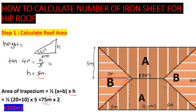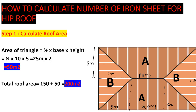Now for the triangles: area of a triangle = half × base × height. Our base is 10 meters and height is 5 meters, giving 25 square meters per triangle. We have two triangles, so that's 50 square meters. The total roof area is 150 (trapezium) plus 50 (triangles) = 200 square meters.